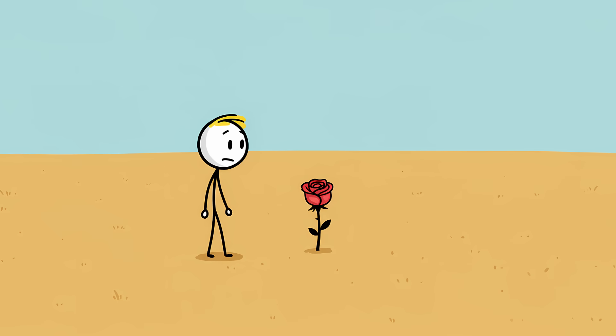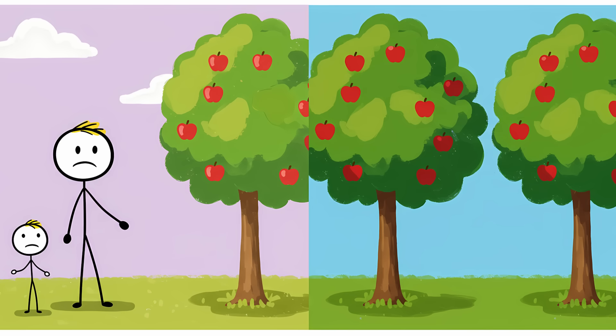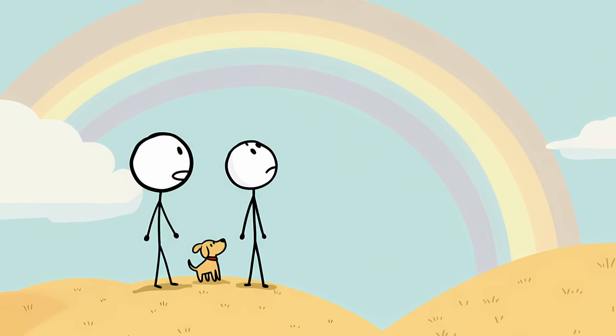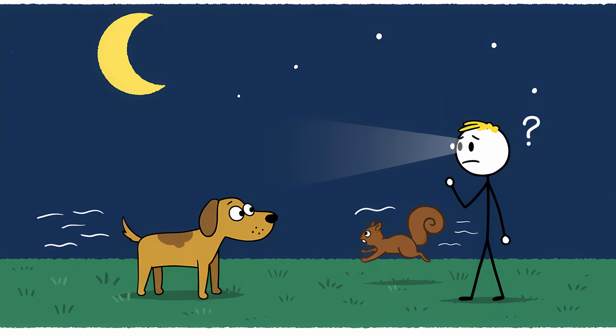To your dog, a vibrant red rose sitting in a lush green lawn looks like a yellowish-brown flower in a field of, well, also yellowish-brown. It's similar to the most common form of human colorblindness. So while they can't appreciate the full majesty of a rainbow, their world is far from black and white. In fact, they have other visual advantages.